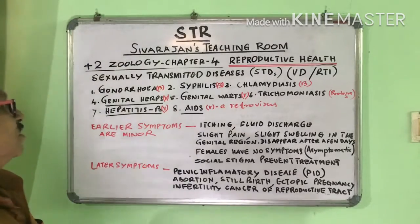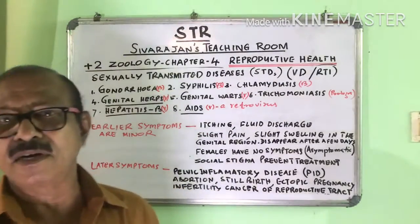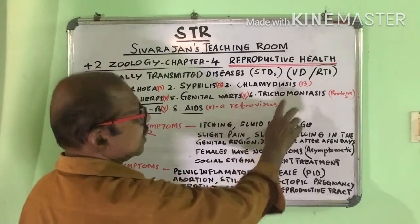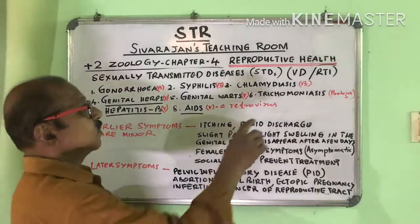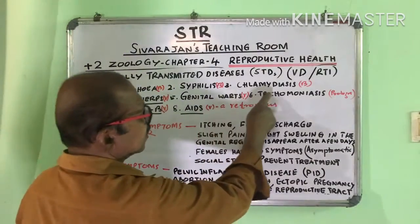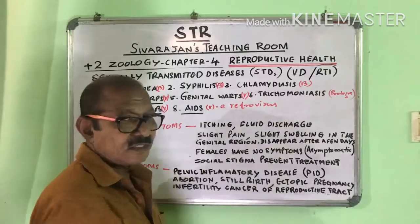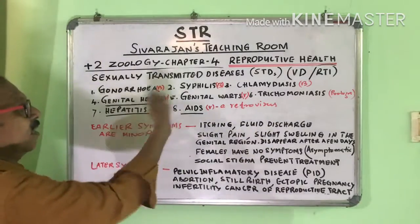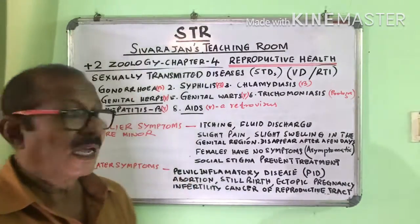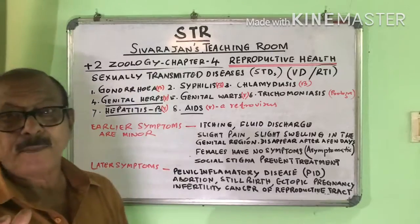Suppose a question comes: Gonorrhea, Syphilis, Chlamydiasis, and Trichomoniasis — find the odd one out. The answer is Trichomoniasis. Because Gonorrhea, Syphilis, and Chlamydiasis are caused by bacteria, but Trichomoniasis is caused by protozoa. Any such grouping can be done using this classification of pathogens.